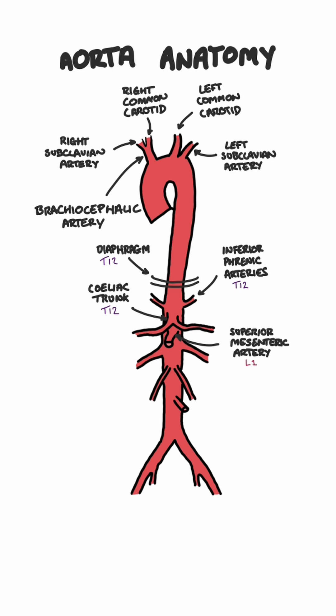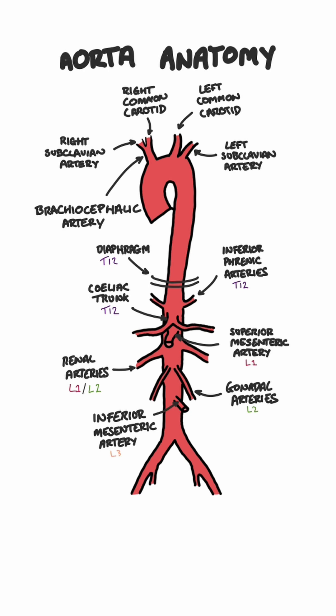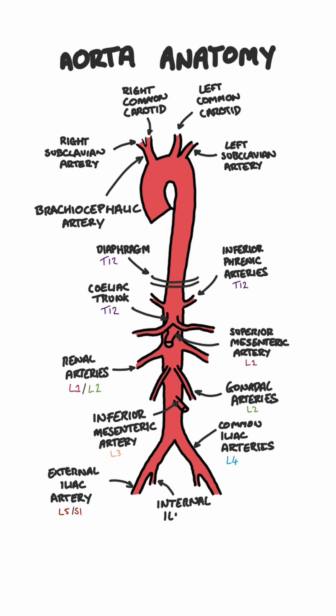At the junction between L1 and L2, we have the paired renal arteries that supply the kidney, and just below them we have the paired gonadal arteries. Next, we have the inferior mesenteric artery at the level of L3, which supplies the large intestine from the splenic flexure to the upper part of the rectum. At L4, we have the bifurcation of the aorta into the common iliac arteries, which further divide into the external and internal branches at L5-S1.